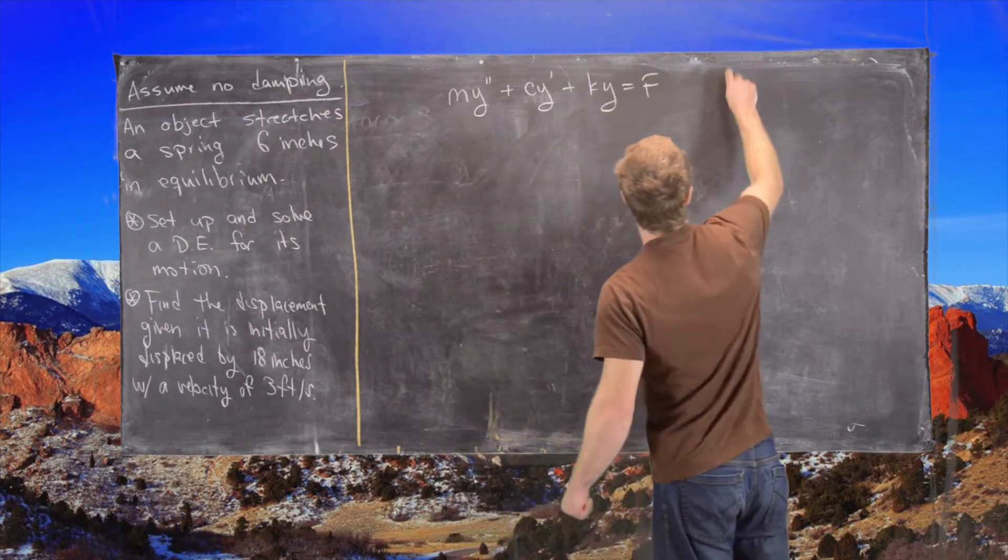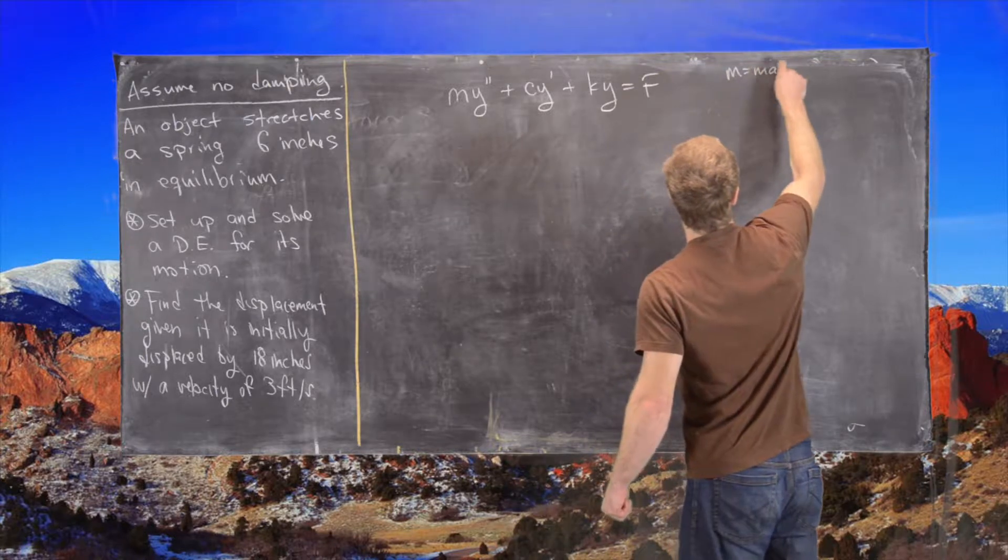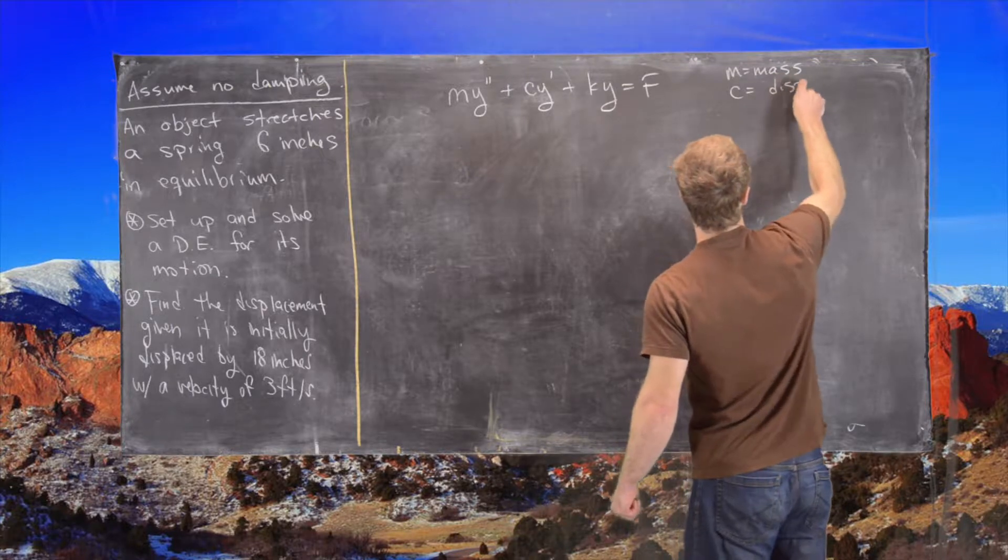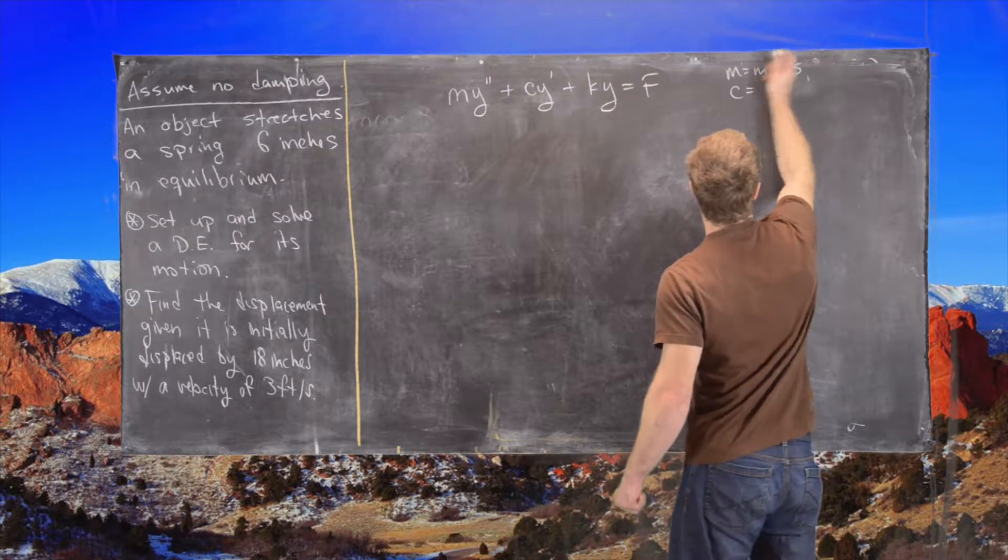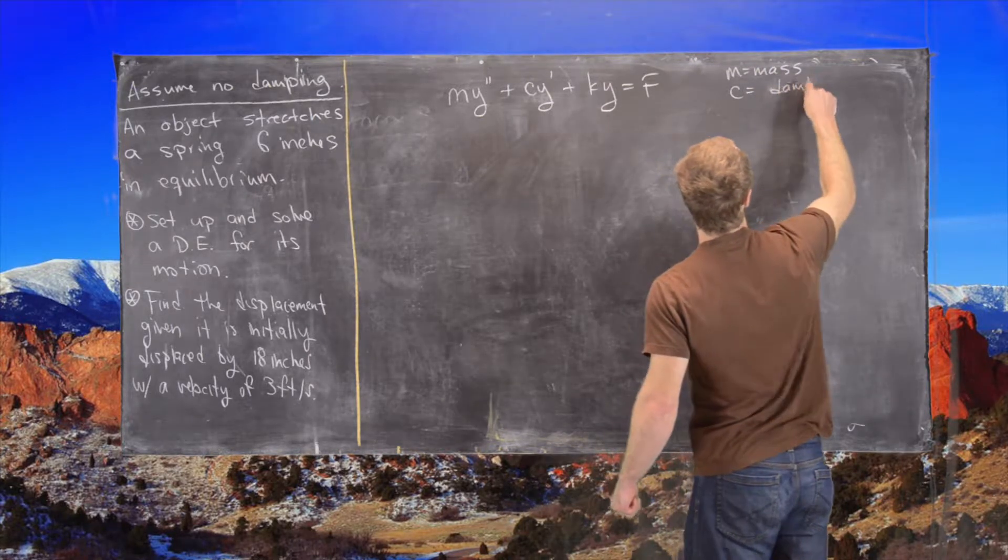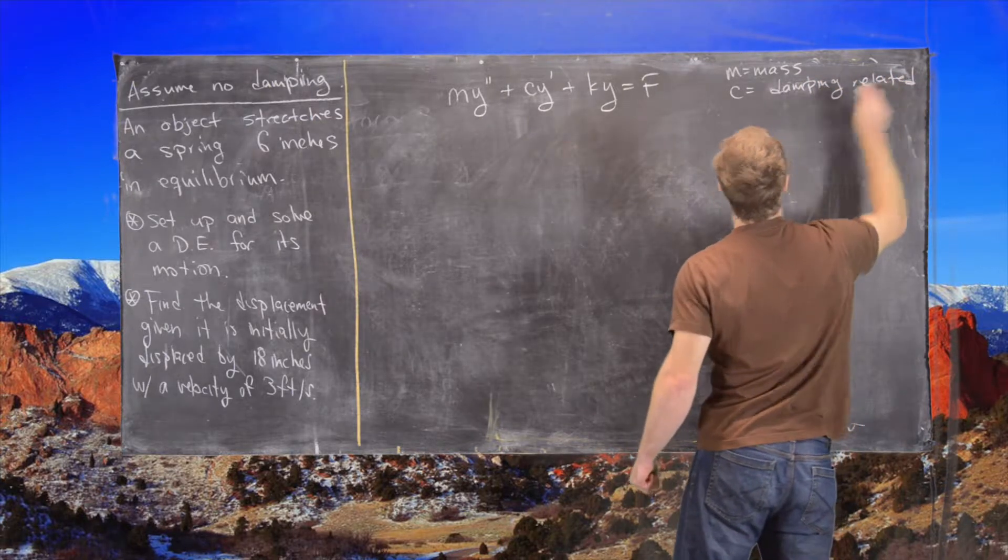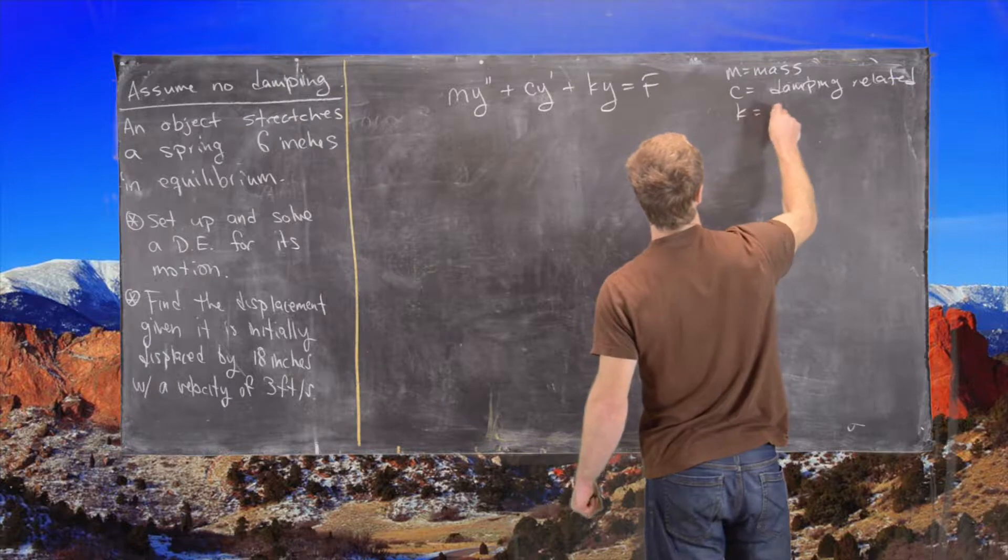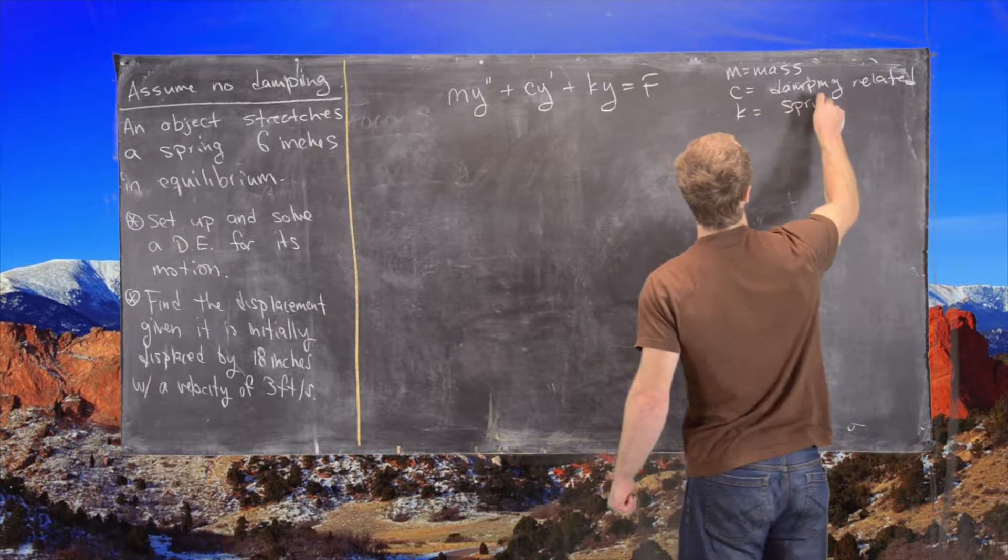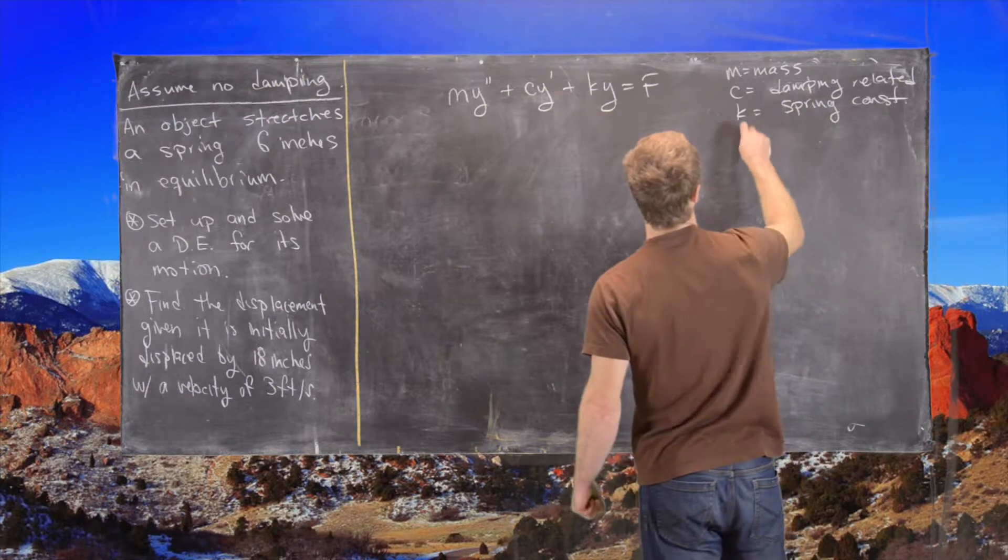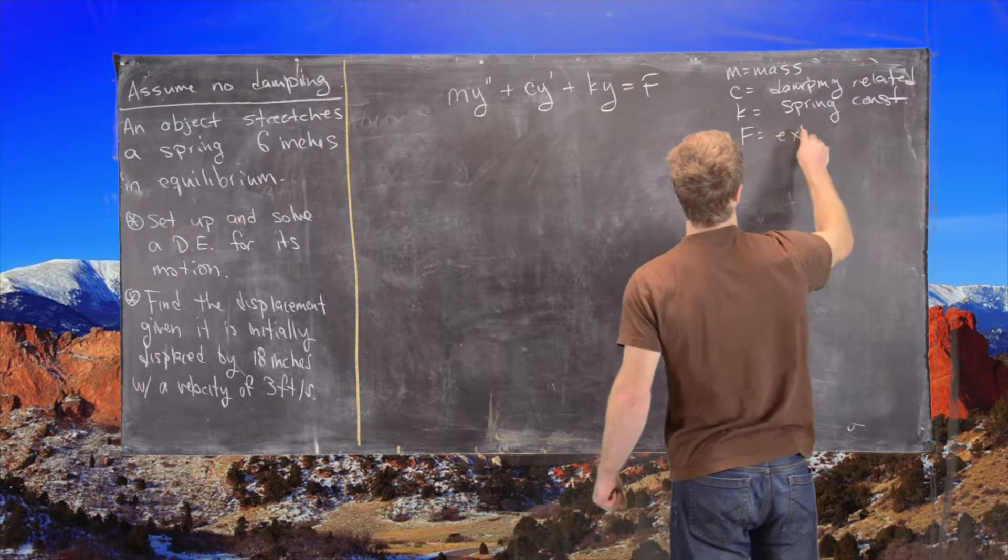where m is the mass of the object, c is a constant related to the damping, and then k is the spring constant, and finally f is some external force.